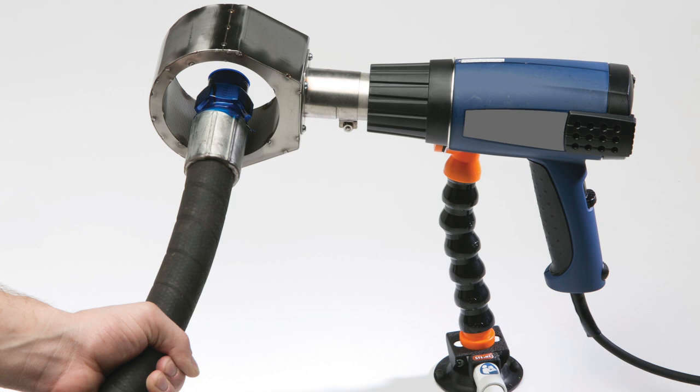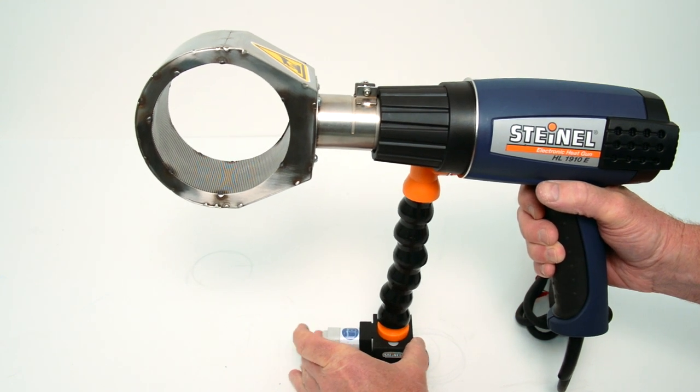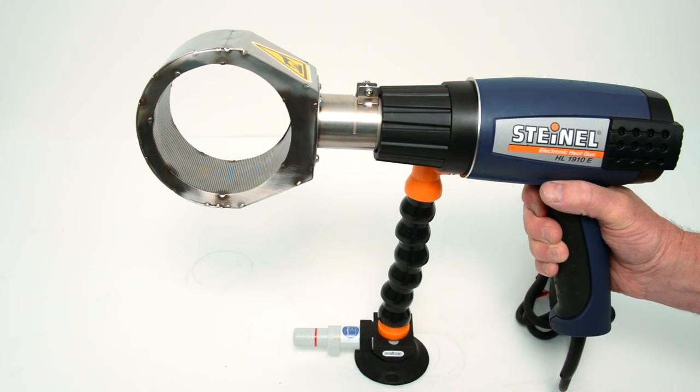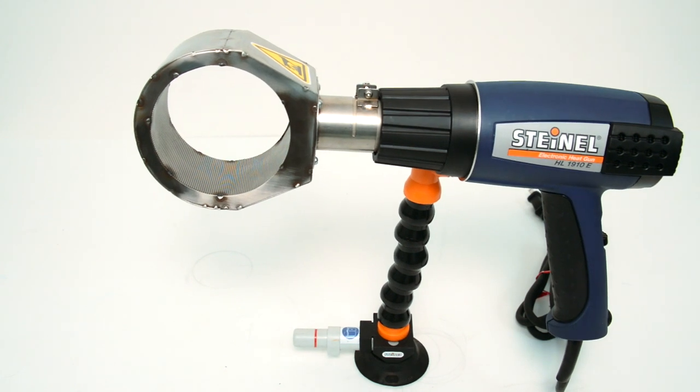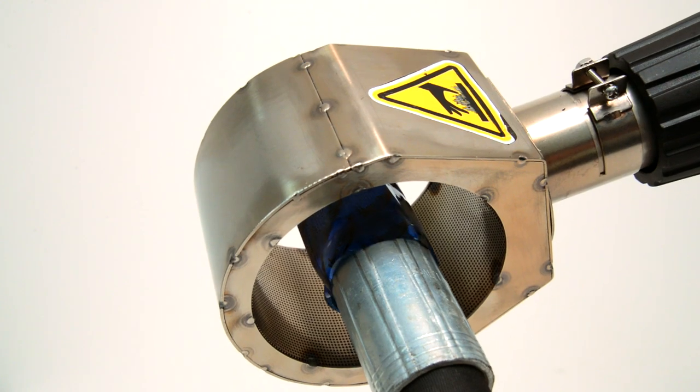UltraClean also offers an industrial heat gun with diffuser. The heat gun can be bench mounted by using the vacuum pump adjustable stand for hands-free operation. The heat shrink gun and diffuser can also be taken directly to the hose or tube if required.